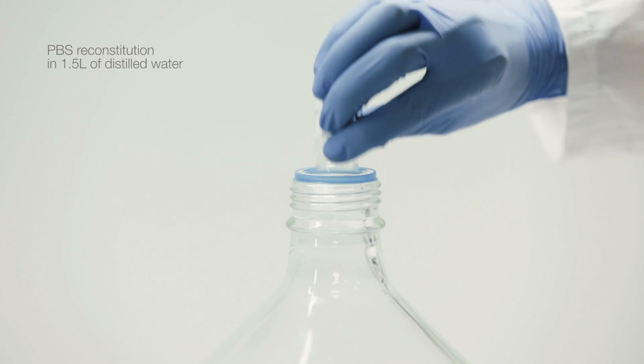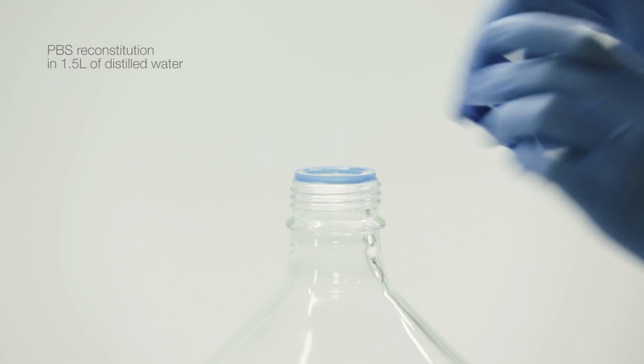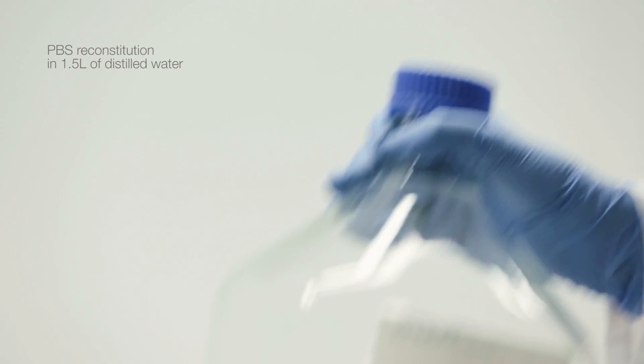The PBS should be prepared for use by reconstituting it in 1.5 liters of distilled water. Make sure it is properly mixed to reach the optimal concentration.